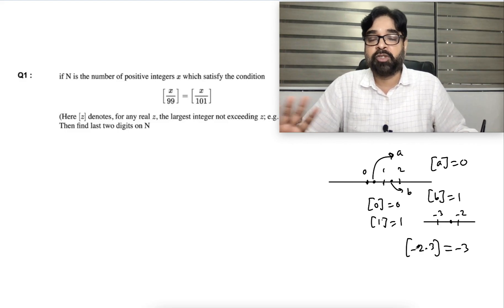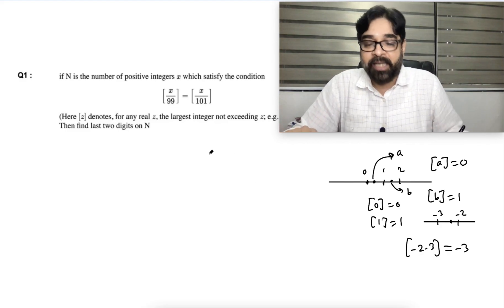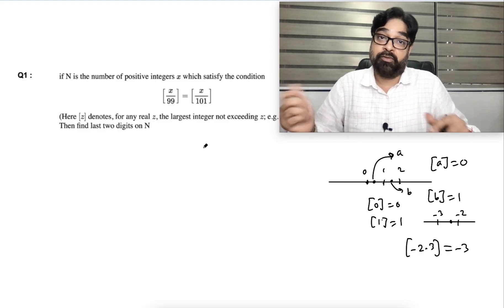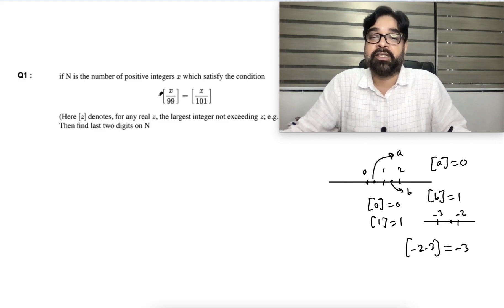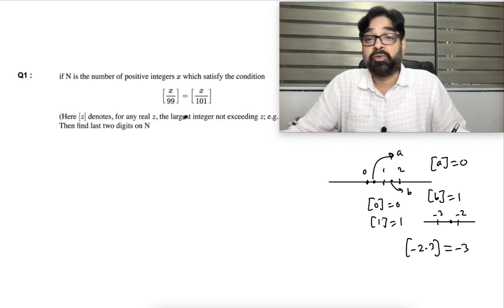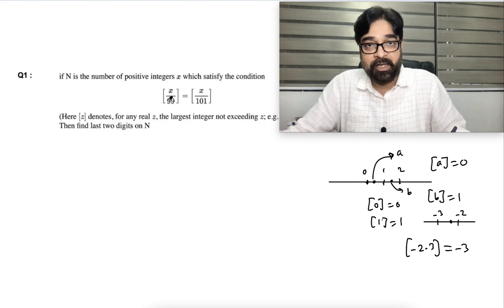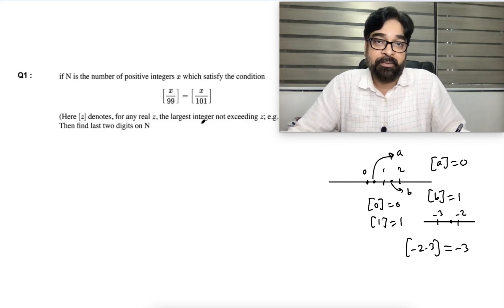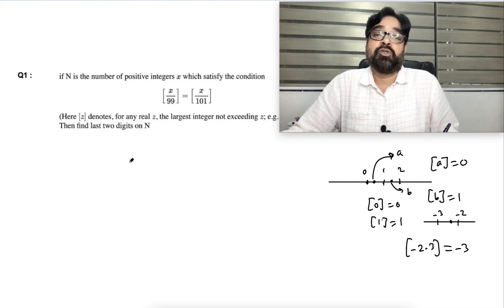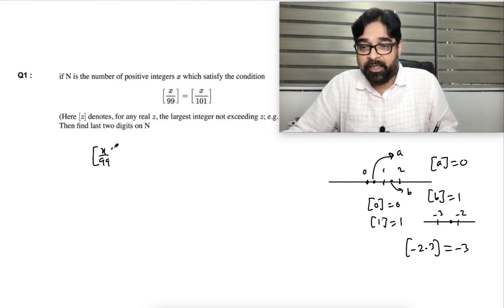Now, let's try the problem manually first, then develop a method. They are asking: find all positive integers x for which GIF(x/99) equals GIF(x/101). Since x is positive, both quantities are on the right side of zero, so they are non-negative integers. The first possible case is that greatest integer of x/99 equals greatest integer of x/101, and both are zero.